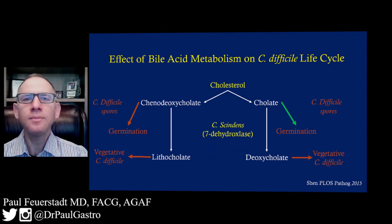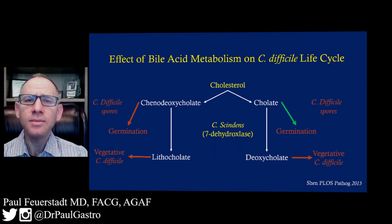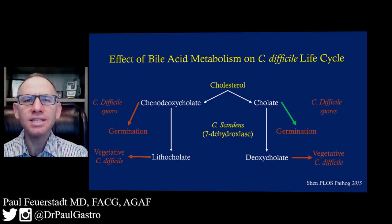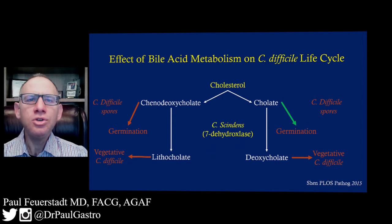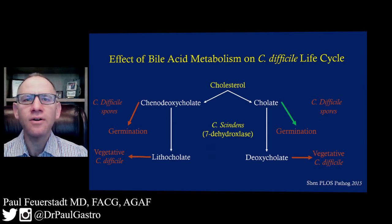Cholate becomes deoxycholate, and chenodeoxycholate becomes lithocholate. The enzyme that stimulates that conversion is 7-dehydroxylase, which is released by the bacteria C. scindens. The two secondary bile salts, deoxycholate and lithocholate, inhibit the vegetative phase of C. difficile.